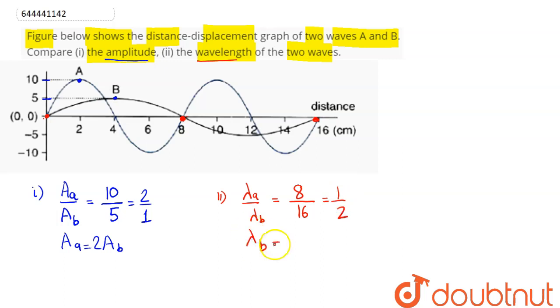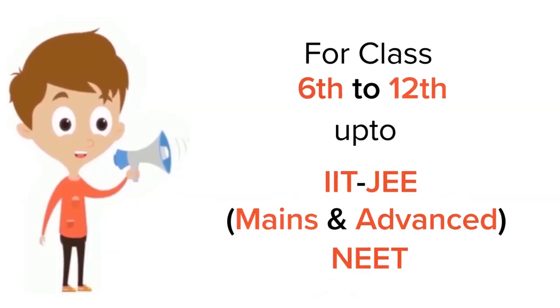in this case, wavelength of B is twice the wavelength of A. Hence we have compared the amplitude and wavelength of these two waves. This is our answer for Class 6 to 12, IIT-JEE and NEET level.